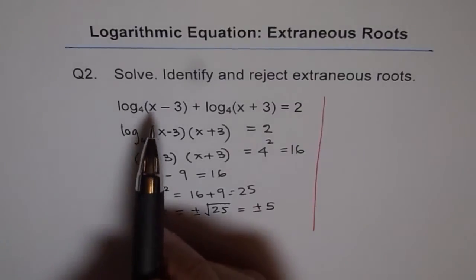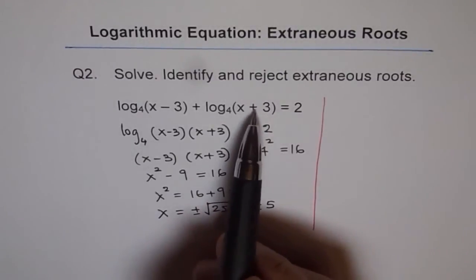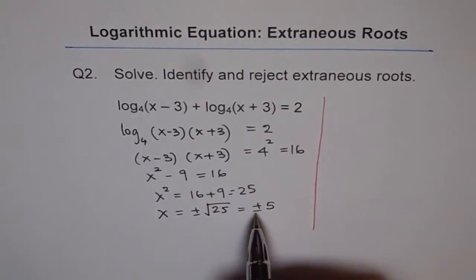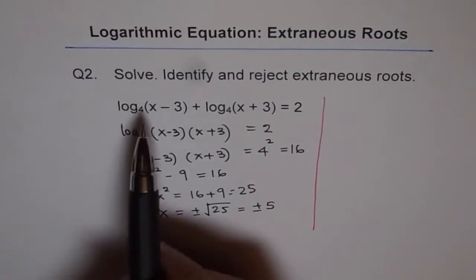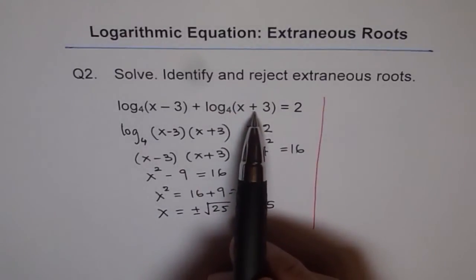When I write +5, what do I get? Plus 5 gives me 2 here and 8 here, so that is within the domain. But if I plug in -5, then I get -8. Now the domain is greater than 3 here, or -3 here.